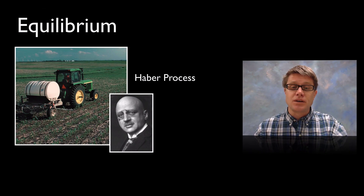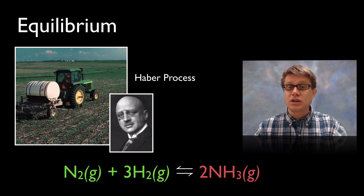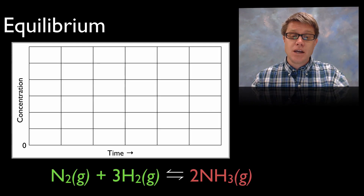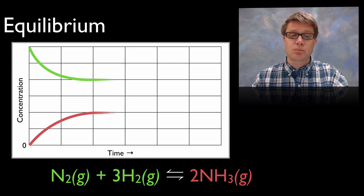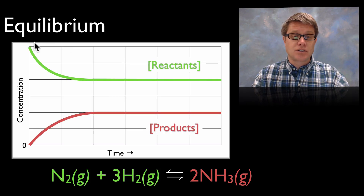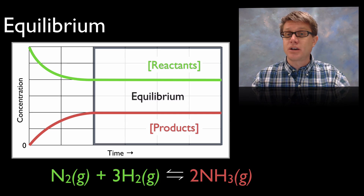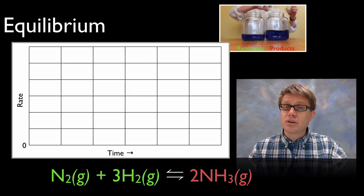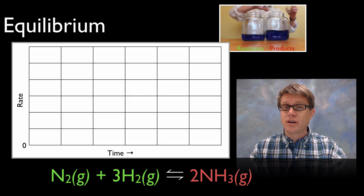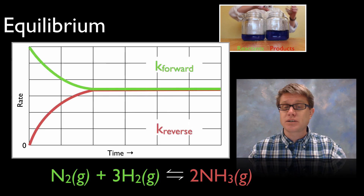An example I'll use throughout this is the Haber process — the process by which we make ammonia. We're taking nitrogen and hydrogen gas and converting them together to make ammonia. It's a reversible reaction. If you look at concentrations over time you get a graph where we have way more reactants at the beginning than products — in fact zero products at the beginning — and eventually they reach a point where they stay the same over time; that's our equilibrium point. Looking at a different graph of the rate of the reaction forward and backward, those two rates merge at equilibrium.